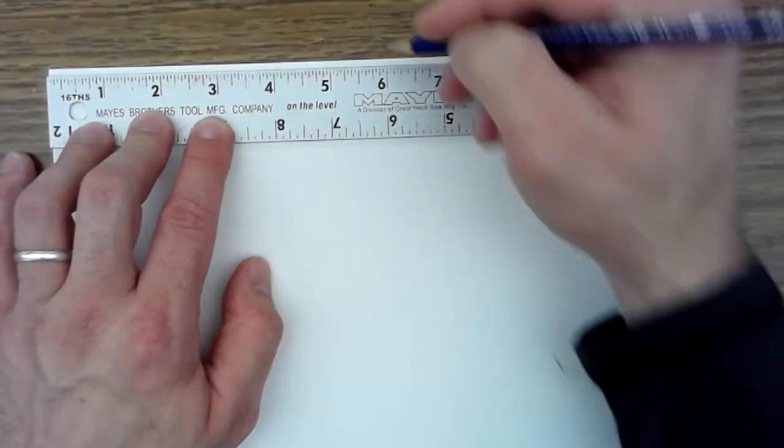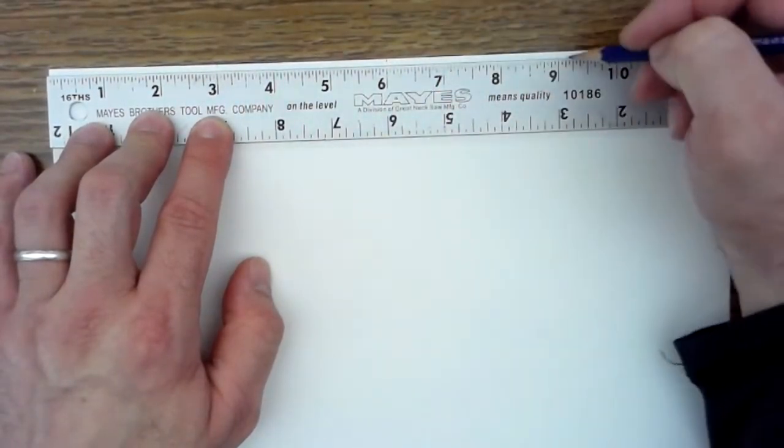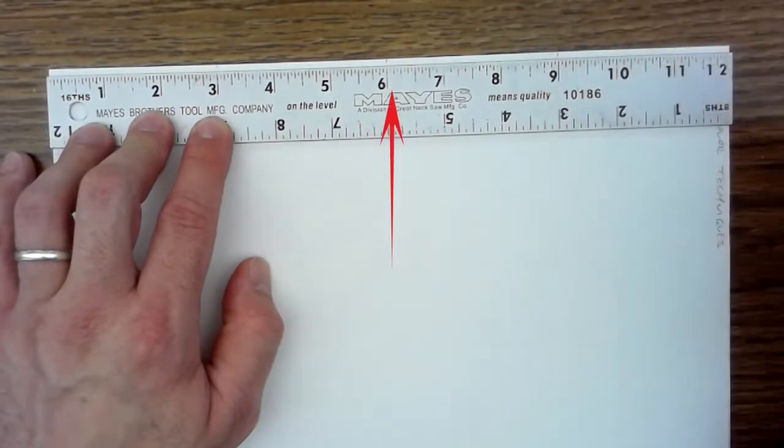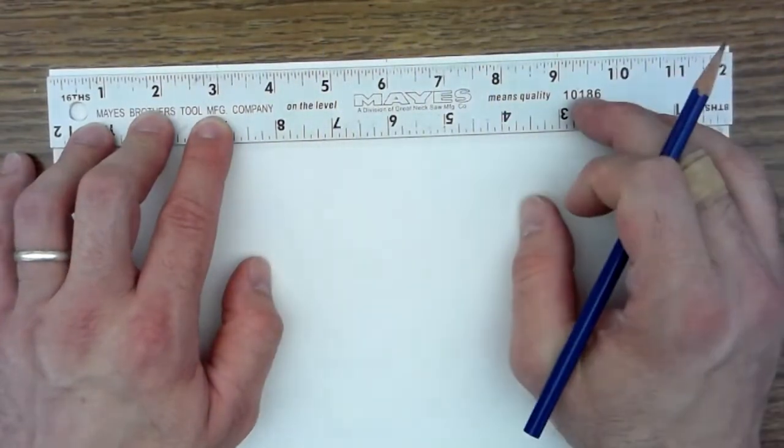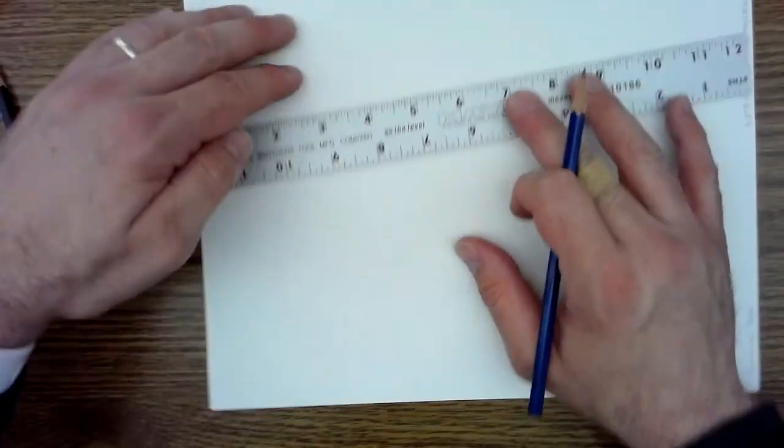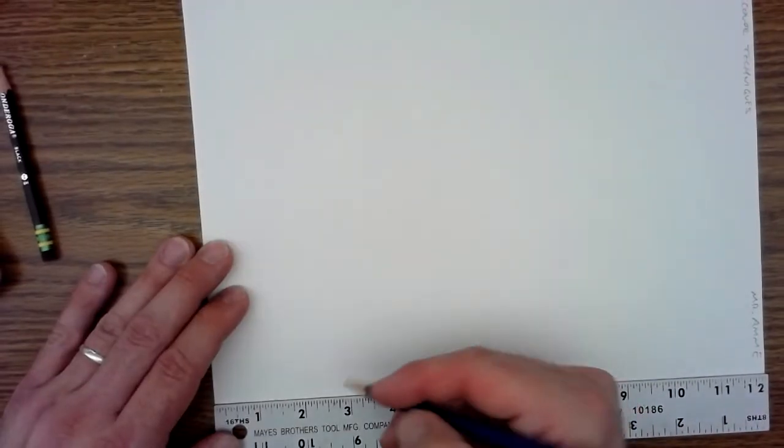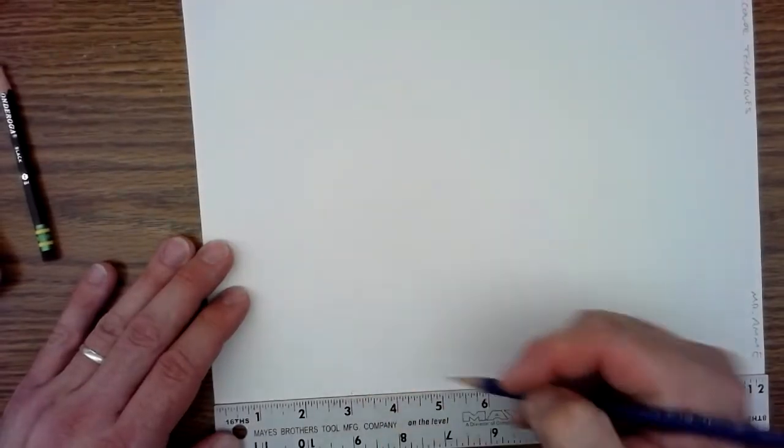So make a mark. Three, six, nine. That gives me four rows. I'm going to move my ruler to the bottom of my paper. I always want to measure from the same side. Three, six, and nine.